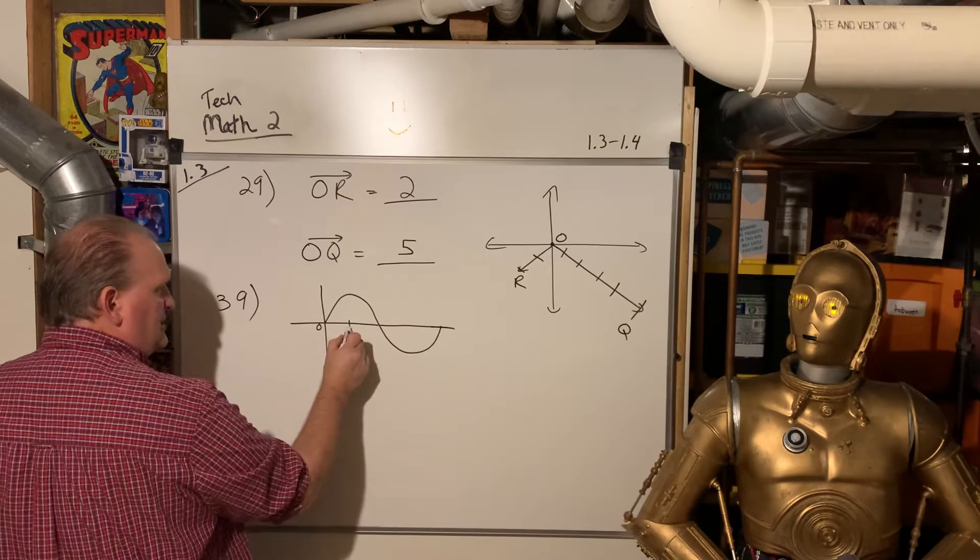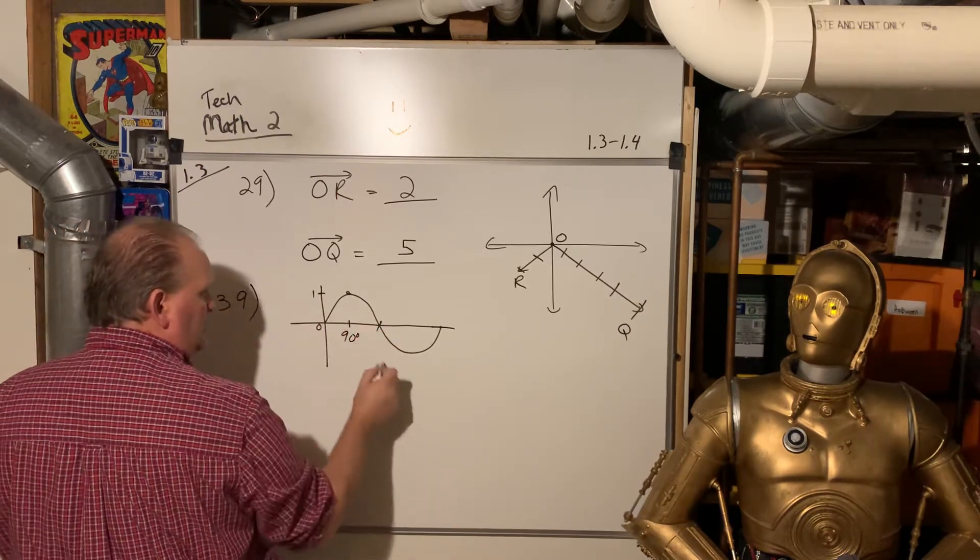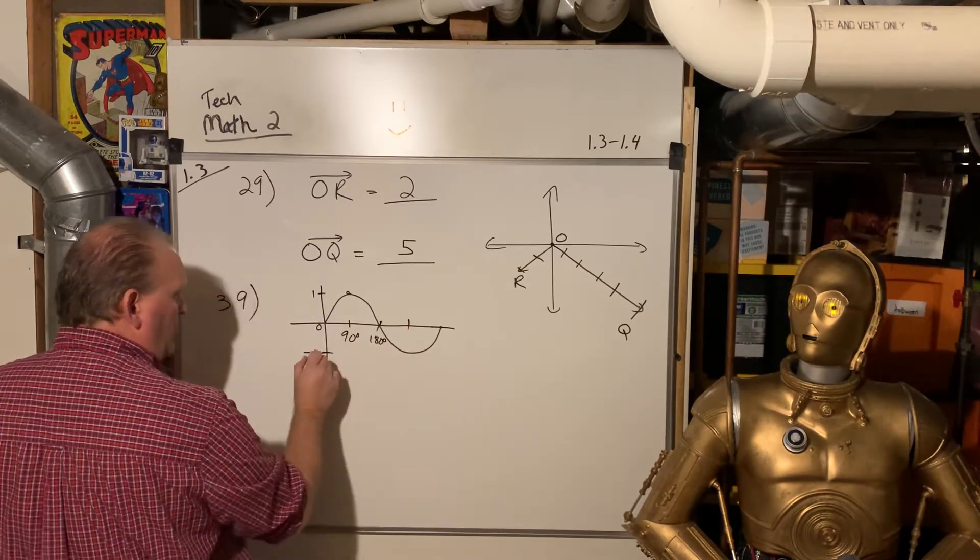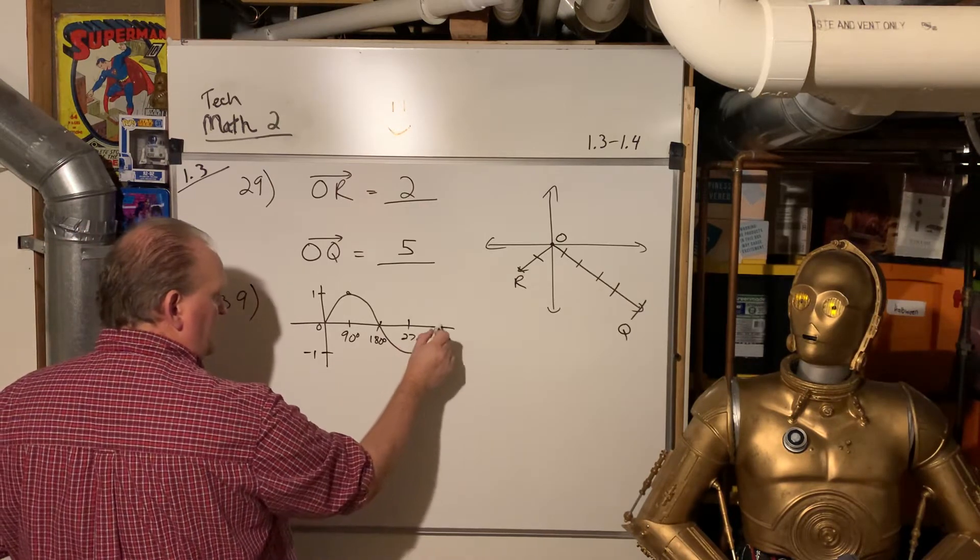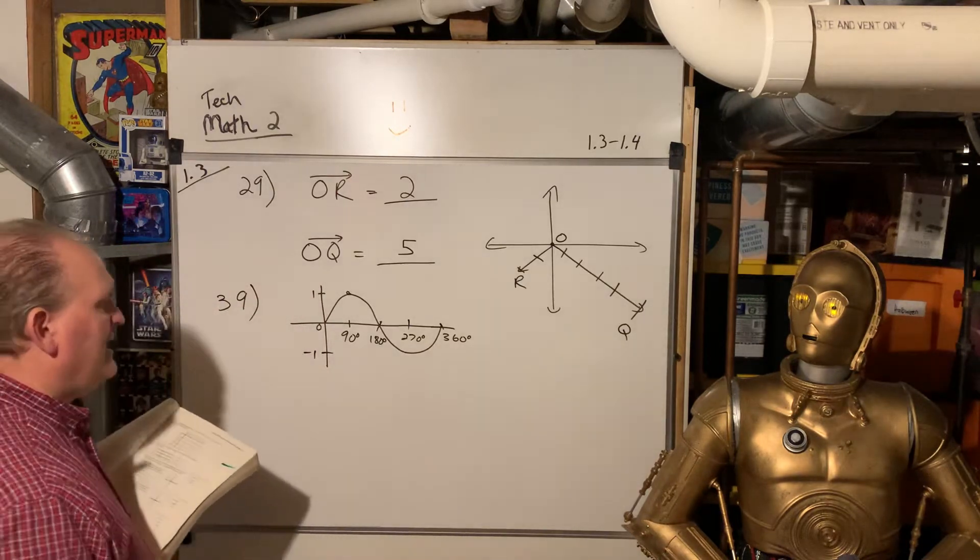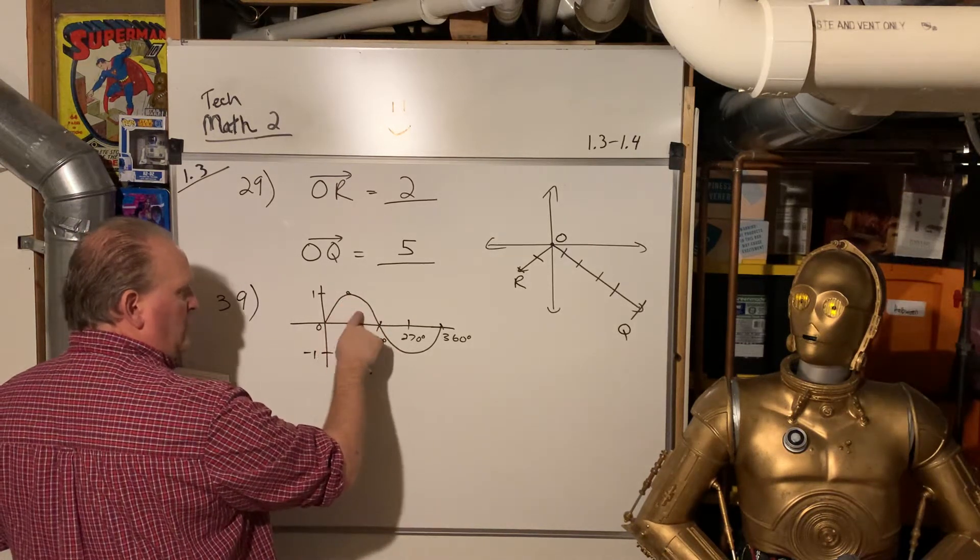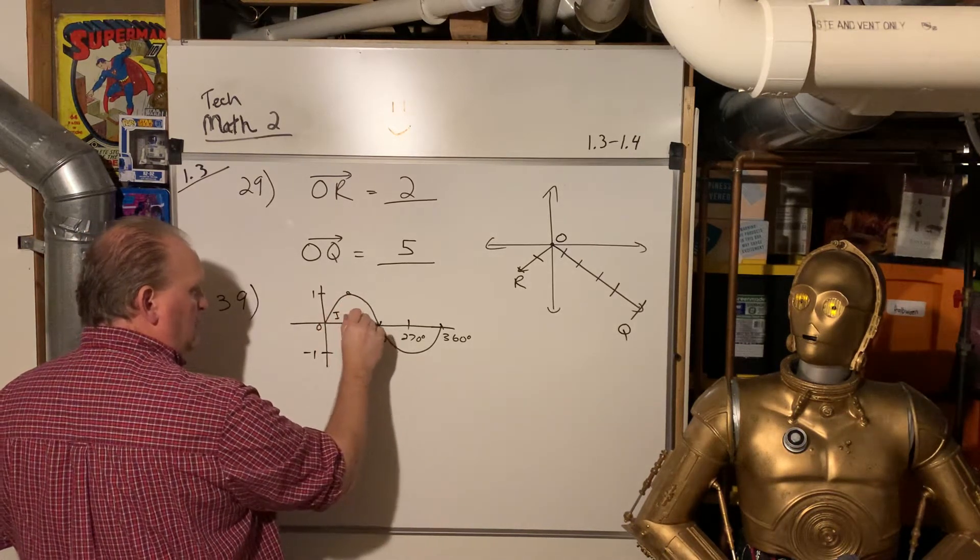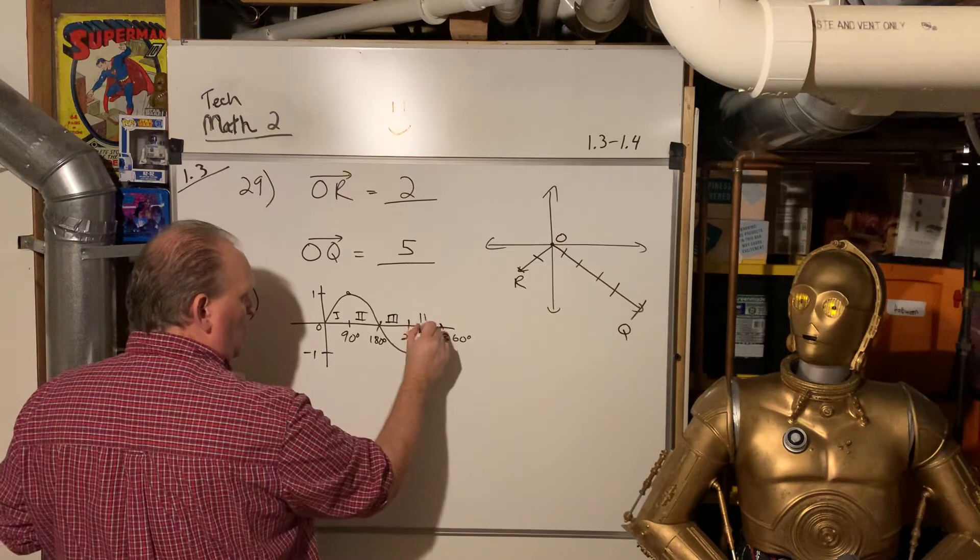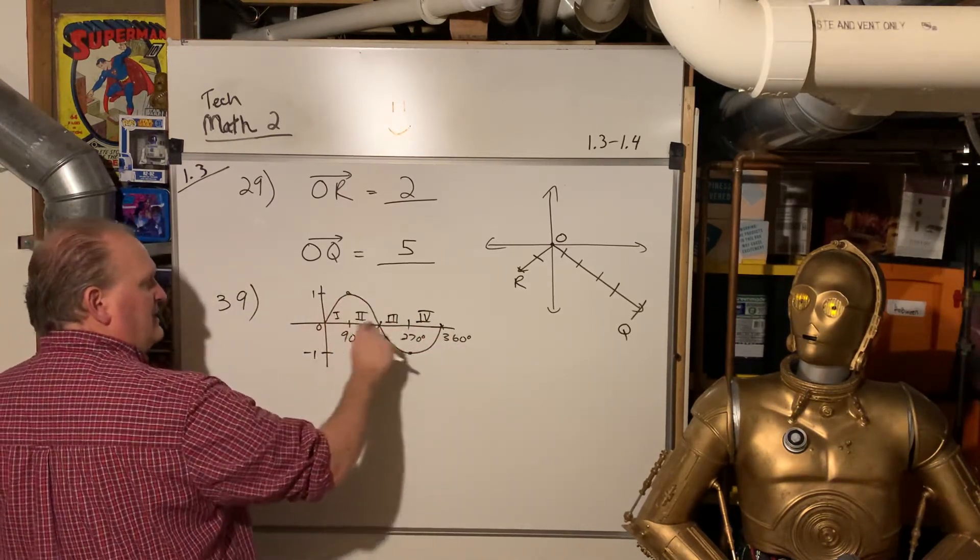So you do a general sine wave here. This is 0 degrees. It peaks at 90 degrees. And it peaks at 1. It hits 0 again at 180 degrees. It goes to the lowest point at negative 1. That happens at 270. And then we're back to 0 at 360. So look at it. This is positive between 0 and 1.